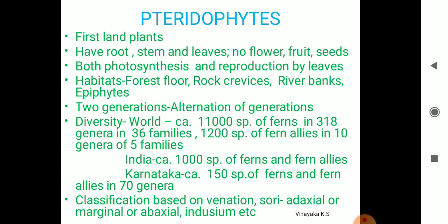Pteridophytes have a longer sporophytic generation than the gametophytic generation. Looking at the diversity of pteridophytes in the world, there are more than 11,000 species. Pteridophytes are referred to as ferns and fern allies. There are about 36 families representing 1,200 species of ferns in the world. In India there are about 1,000 species of ferns, and in Karnataka specifically there are 150 species of ferns and fern allies, about 70 genera.